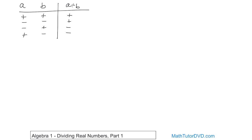The reason we flew through that is because it's exactly the same rules as for multiplication. Basically, if the signs match, you're always going to get a positive answer. And if the signs don't match, you're always going to get a negative answer. So you don't have to memorize anything differently for dividing numbers.